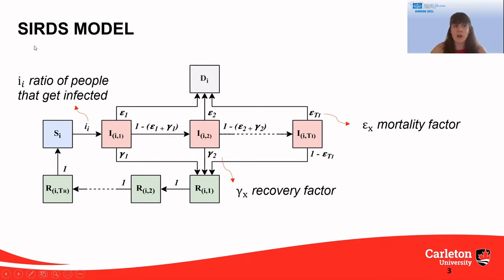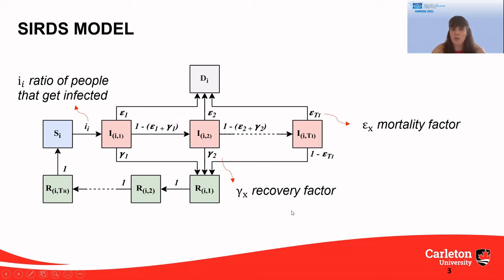Let's take a look at one of these disease spread models. In this case, we use a Susceptible, Infected, Recovered, Dead, Unsusceptible model. In this model, the population is divided into four categories: those that are susceptible to the disease, those that are infected, those that are dead, and those that recover. We define equations for how individuals move from one group to the other.